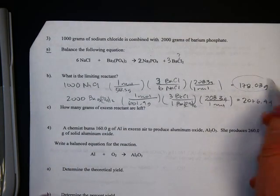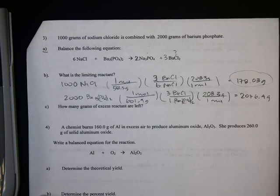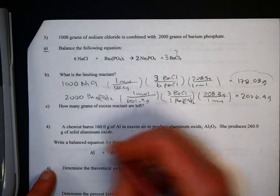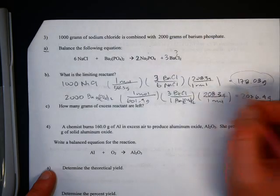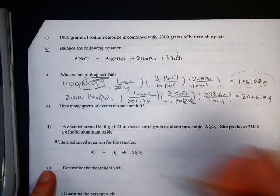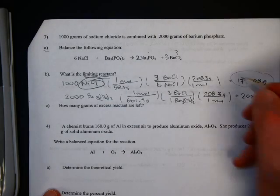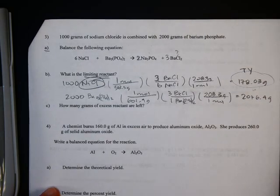And the other one is 2000 times 3 times 208.3 divided by 601.9. And I got 208.6. So in this case, the smaller number is your answer. So 178.03 is the... Oh, it just says what's the limiting reactant. So then sodium chloride is the limiting reactant. They don't ask how much do you make, but this is how much you make. That's called a theoretical yield in case that's asked to you.